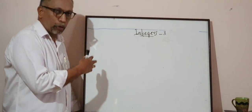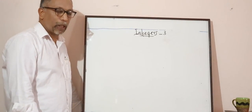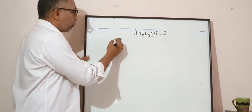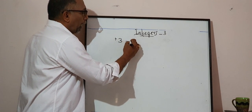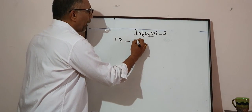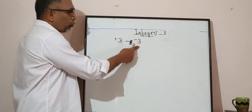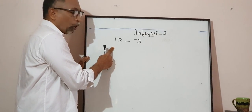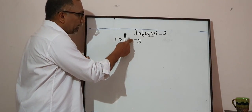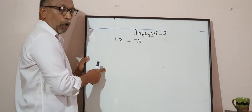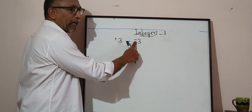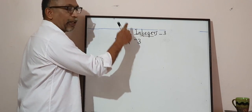We are going to do subtraction now. Let's take an example: 3 — positive 3 — minus negative 3. When you read this, you have to be very careful. The plus sign here is an operation sign. The operation sign should be read as 'minus,' and this is negative. So it reads: three minus negative three.